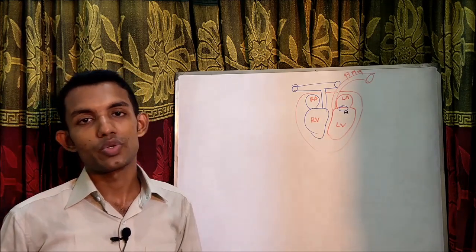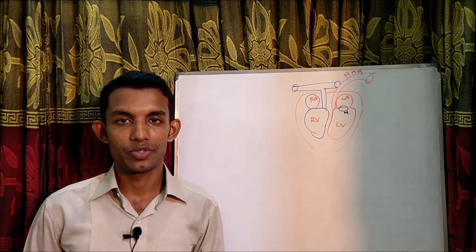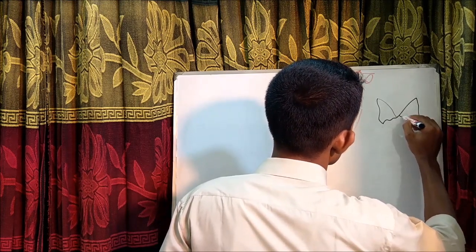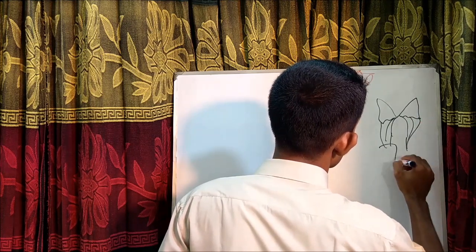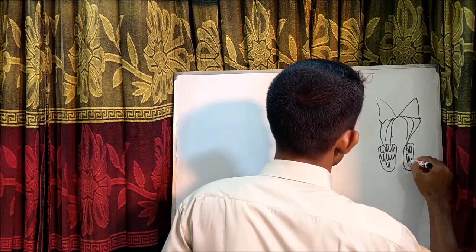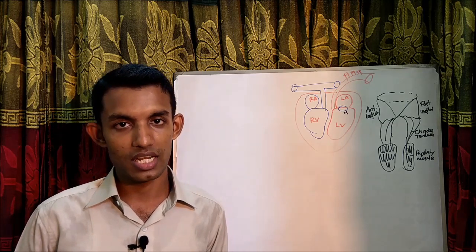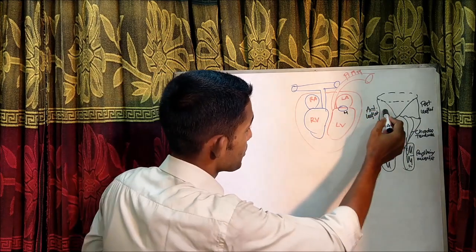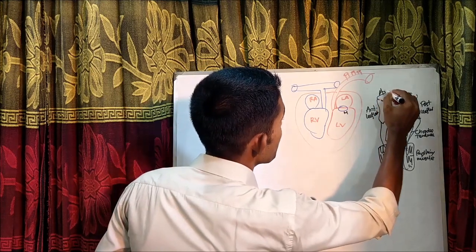In older age, mitral stenosis may be due to heavy calcification of the mitral valve apparatus. The mitral valve apparatus consists of the anterior leaflet, posterior leaflet, chordae tendineae, papillary muscles, and the annulus.